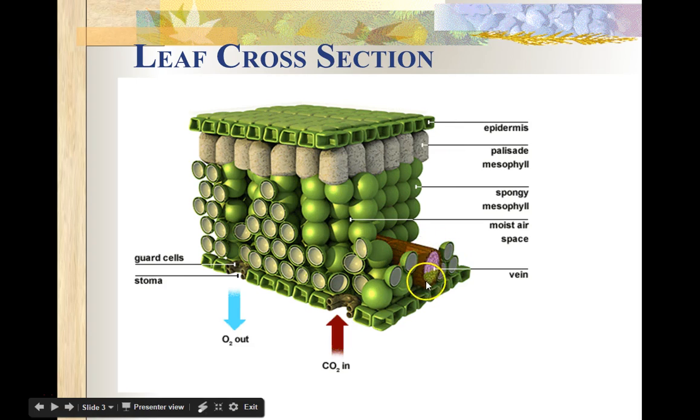And in this particular diagram, there's two different colors. Within this vein, there are specialized cells called xylem cells and phloem cells. So in this particular case, you really can't distinguish the difference between xylem and phloem. But one of the things you should know is that